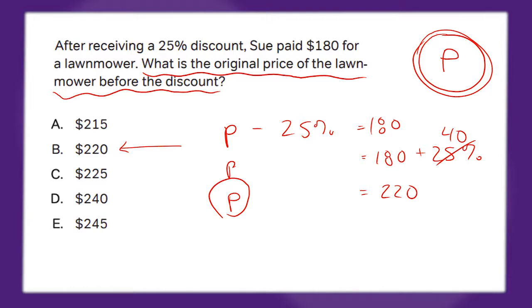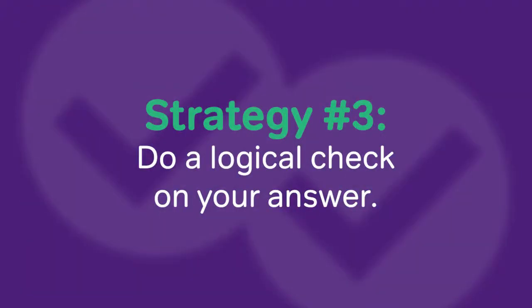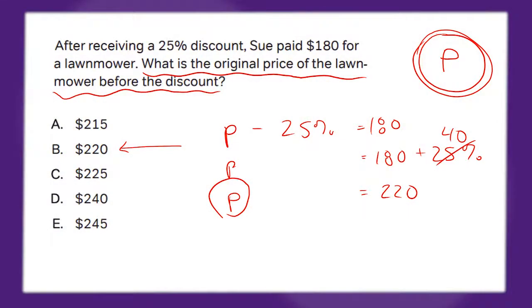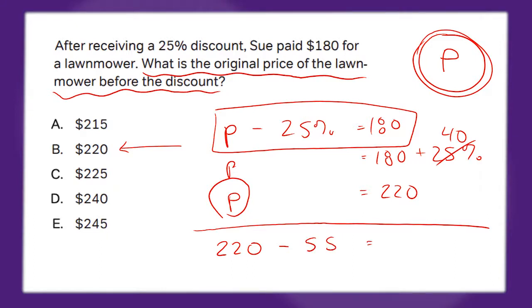So what we're going to do here is use our third and final strategy, which is do a logical check. Now often people think checking your work means doing the same math all over again, but that's only going to catch calculation errors, not errors in logic. What I'm going to do here is check if my answer makes logical sense. For this problem, a great way of doing that is plugging it back into the problem. So if my original price is actually 220 and I take a 25% discount, that's one fourth off or $55 off, which would mean Sue should pay $165 and that's not 180, huh? And here I see my mistake.